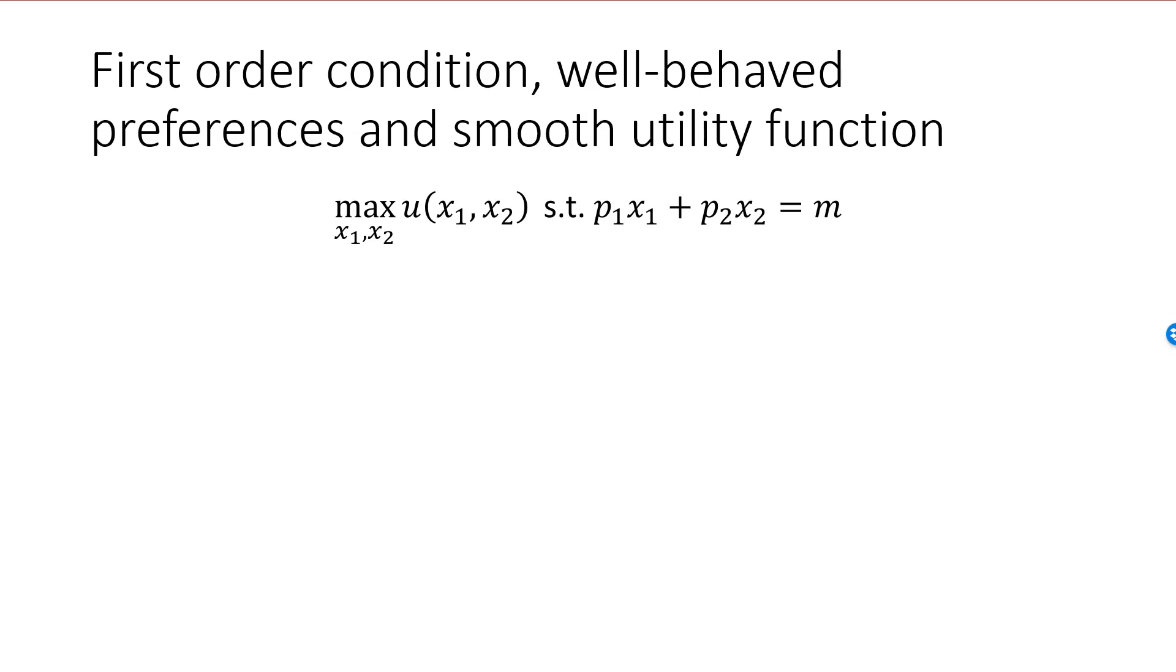The consumer wishes to maximize her utility by choosing x1 and x2. She faces a constraint, the cost of the bundle must be equal to her income. The Lagrangian for this problem is equal to the utility function minus lambda times p1 x1 plus p2 x2 minus m.